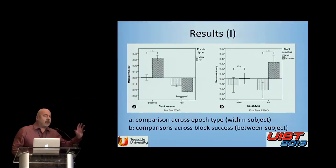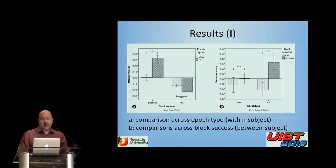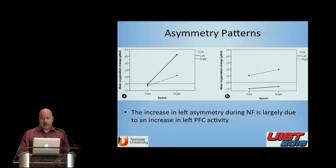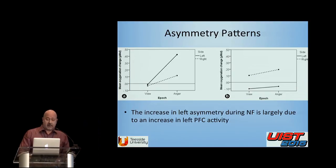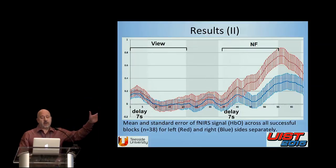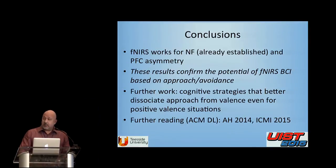There are many ways to analyze and plot the results. One particularly interesting finding is that during the cognitive load task there is really no asymmetry, and it goes up during the neurofeedback epoch. This confirms that the asymmetry is primarily due to an increase in left prefrontal cortex activity. When you plot the entire population of subjects with standard deviation, you see a clear distinction between the neurofeedback left-minus-right activity and the calibration task.